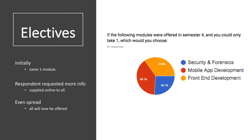We also needed to find out about electives. We had three modules but weren't going to run all three, so we asked the students. Initially it looked like only one module — mobile app development — was the favourite. However, a respondent asked for more information, so we supplied it online to all. What we ended up with at the end of the survey was an even spread, and now all of these modules will be offered.